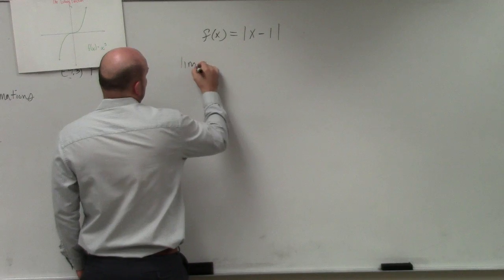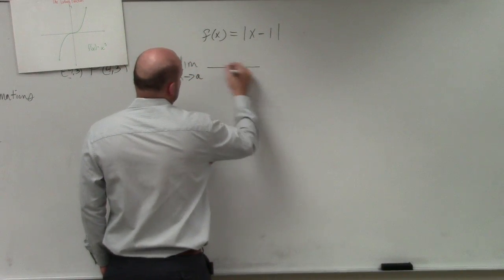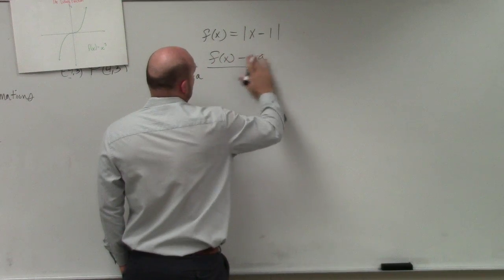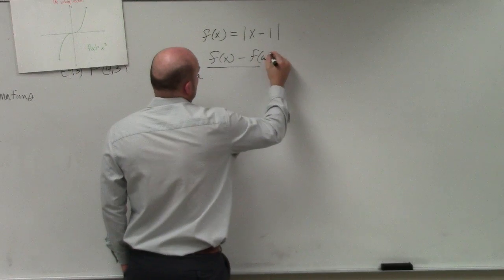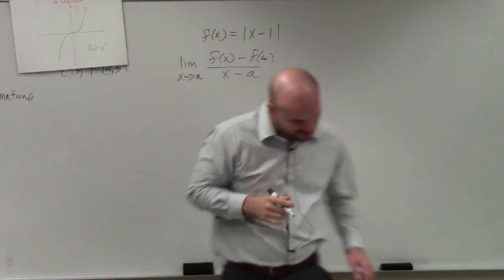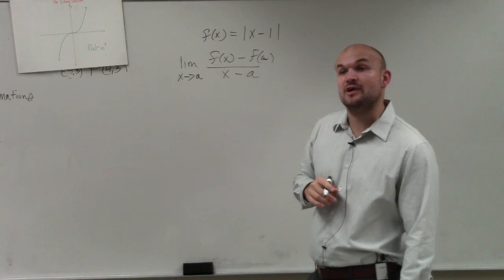So we could have the limit as x approaches a, we could use this limit definition of f of x minus f of a, all over x minus a. And they're asking us to find the limit at x equals 1. They want us to do the limit from the right and from the left.